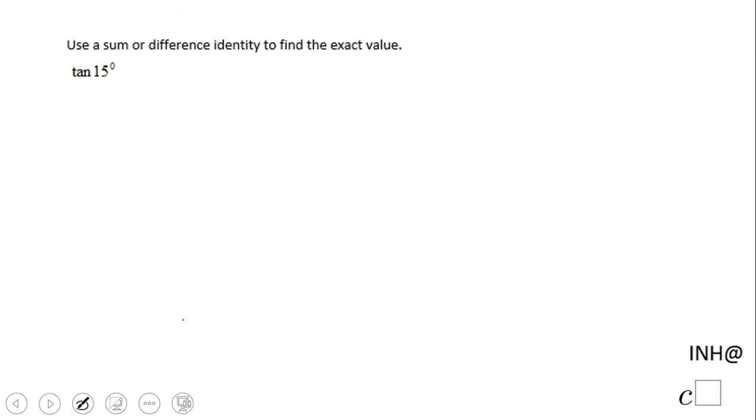Welcome back. I'm here to help at C-square. In this example, we're going to find the tangent of 15 degrees using what is called a sum or difference identity.